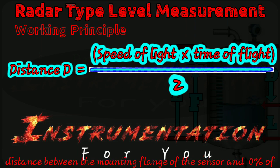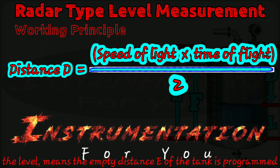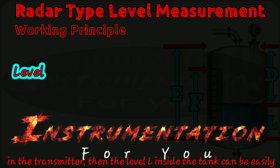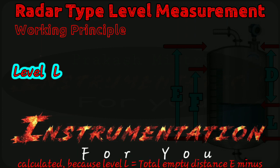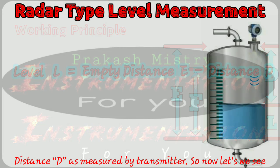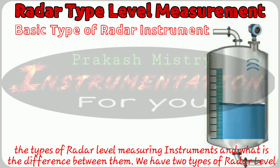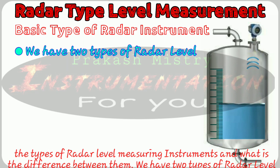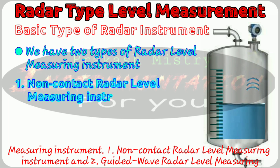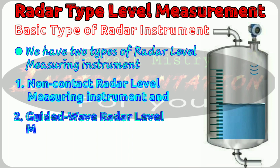If the total empty distance E between the mounting flange of the sensor and the 0% level of the tank is programmed in the transmitter, then the level L inside the tank can be easily calculated, because L equals total empty distance E minus distance D as measured by the transmitter. Now let's see the types of radar level measuring instruments and the differences between them. We have two types: non-contact type radar level measuring instrument, and guided wave radar level measuring instrument.